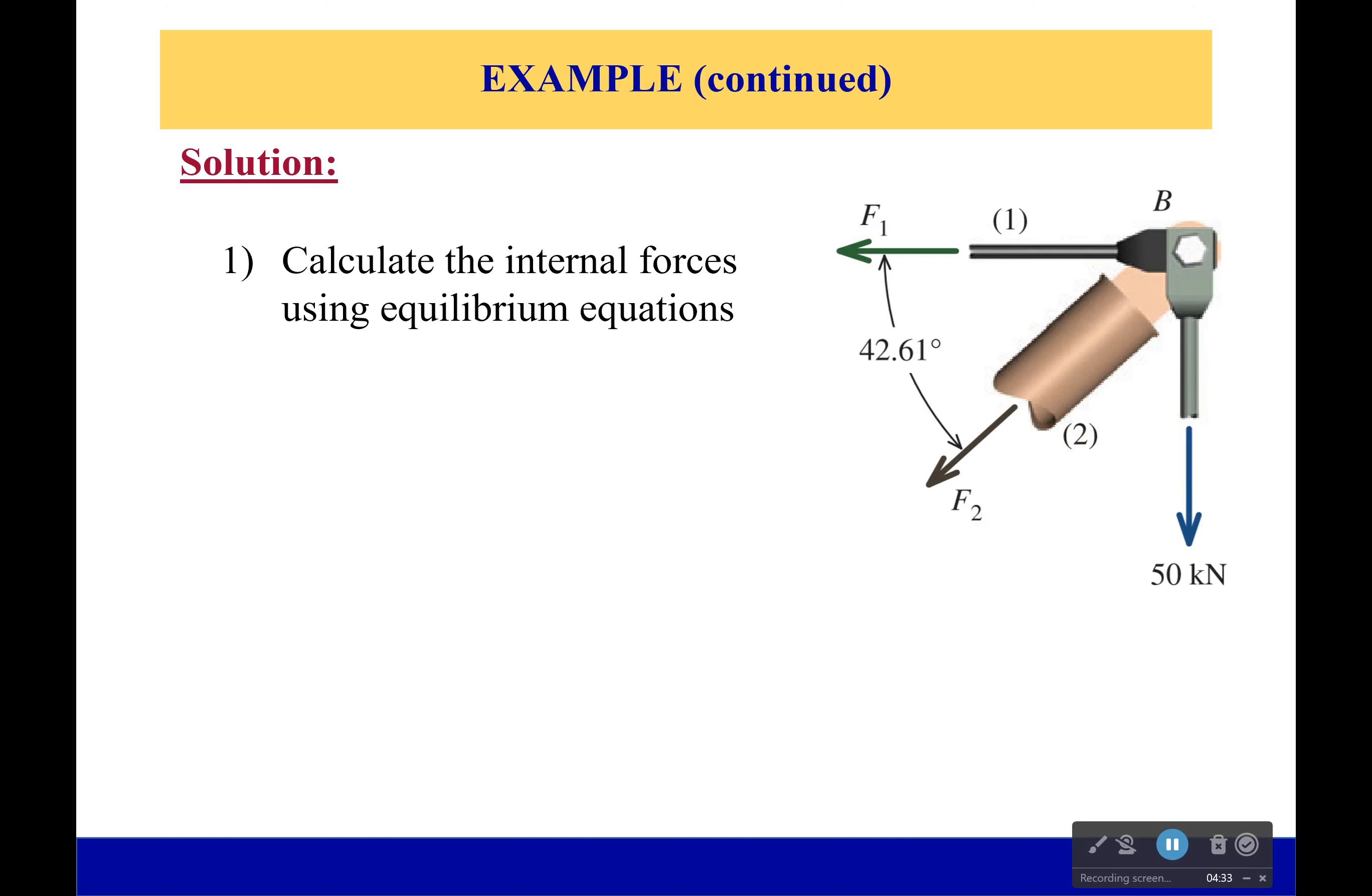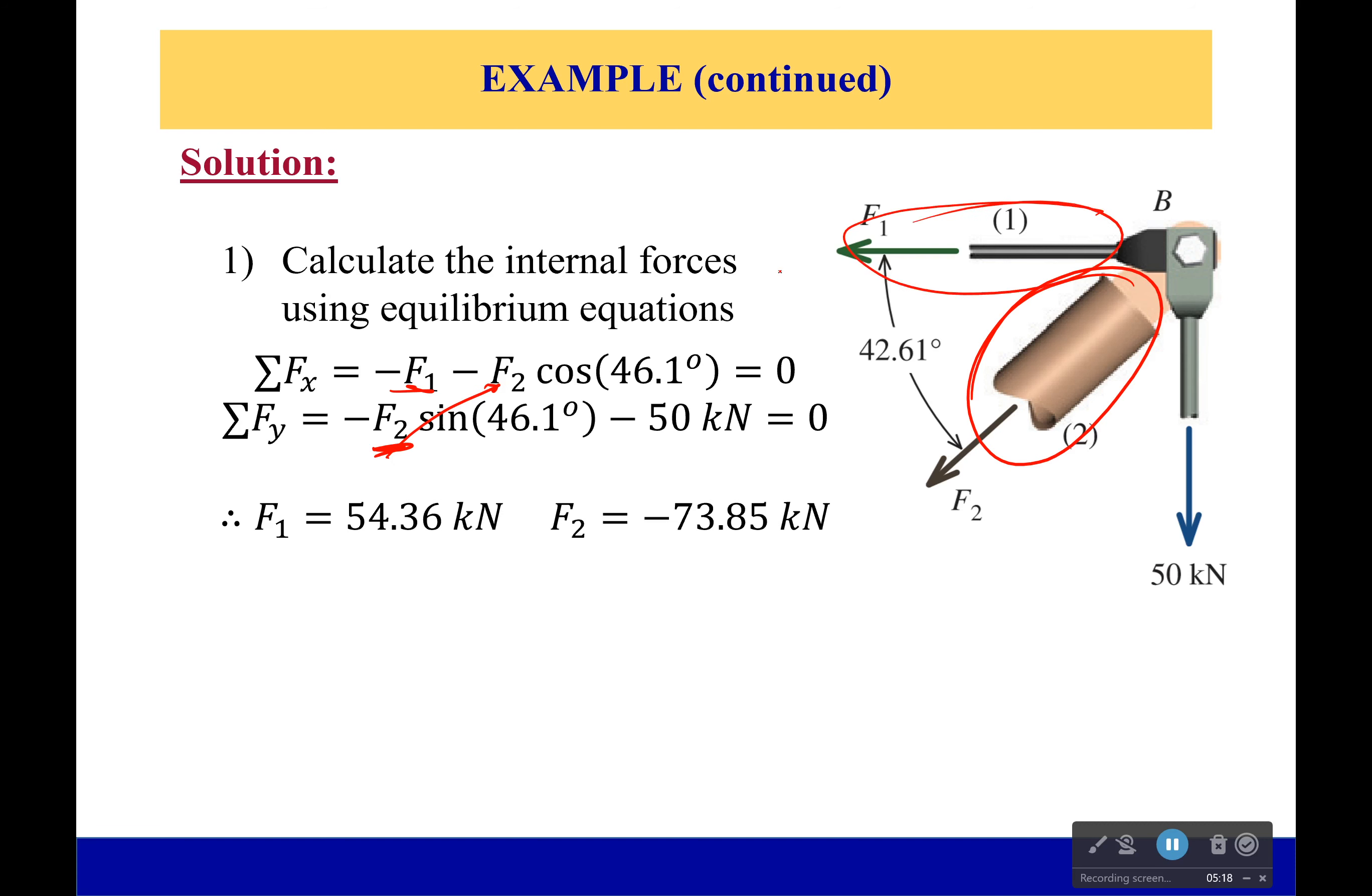Okay so let's calculate those internal forces first. We know 50 kilonewtons is being pulled down and we'll have a force one and a force two right here with an angle of 42.61 degrees. That's just from the geometry. Now if I set up my equilibrium equations, this is a point I only get two of them which is sum of the forces in the x and sum of forces in the y. Well luckily for me I can solve fairly simply. There's only one unknown in the y direction so I can solve for that and I can use that to then solve for f1. They come out to be 54.36 for f1 and f2 will be negative 73.85 which makes sense because we would expect this guy right here to be in compression and this one to be in tension. Remember tension is considered positive in most cases, compression is considered negative.